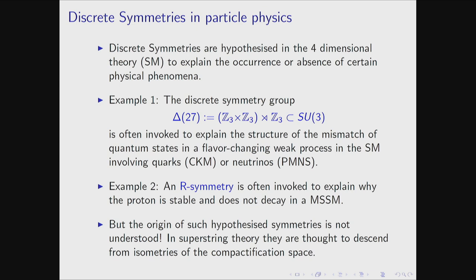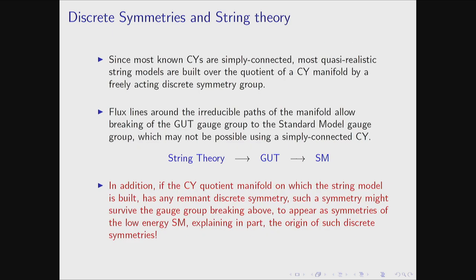Not a lot of work has been done towards this classification. There's another advantage to computing discrete symmetries of compactification spaces: most known Calabi-Yau's are simply connected, but most quasi-realistic string models are built over quotient manifolds, because you need a non-simply connected manifold to break the GUT gauge group to the standard model gauge group. Flux lines around the irreducible parts of the manifold allow this breaking to happen.